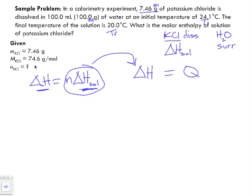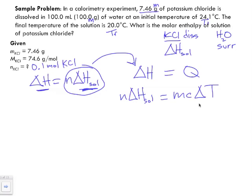To do that, if we divide mass by molar mass, we get a value of 0.1 moles of KCl. So now, instead of delta H, we put N times delta H of solution equal to Q. Q is represented by mc delta T — this represents the heat transfer from the water in the calorimeter.